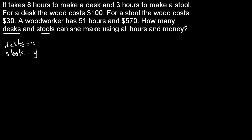Because this is a simultaneous equation type of question, we want two equations. The woodworker has 51 hours and $570, so we're dealing with hours and dollars. Let's make the first equation — the number of hours — so that'll be 51.